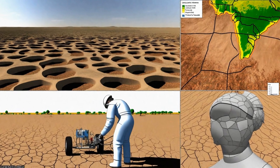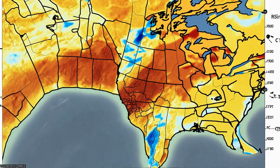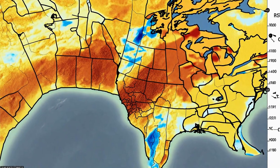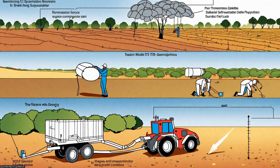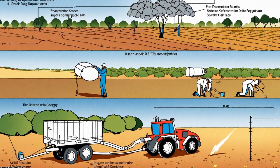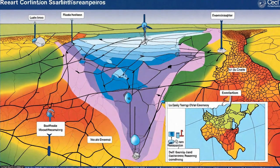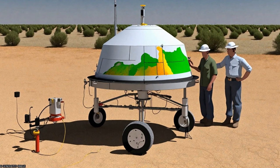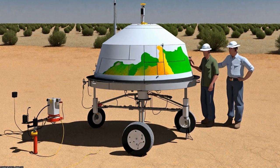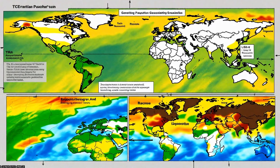Thermal Infrared (TIR) Remote Sensing of Land Surface Temperature (LST) provides valuable information about subsurface moisture status required for estimating evapotranspiration (ET) and detecting drought conditions.